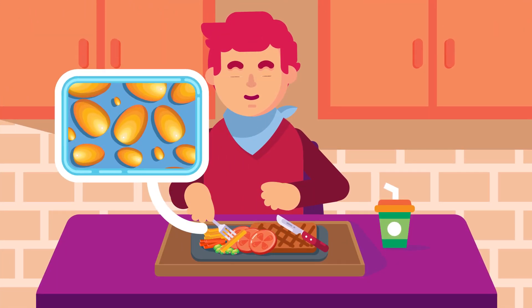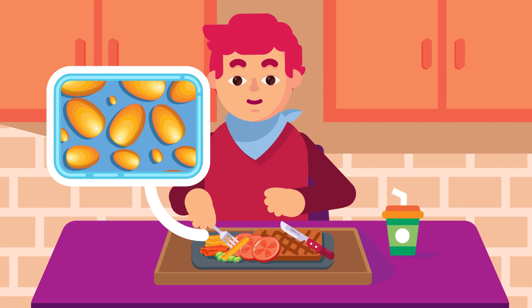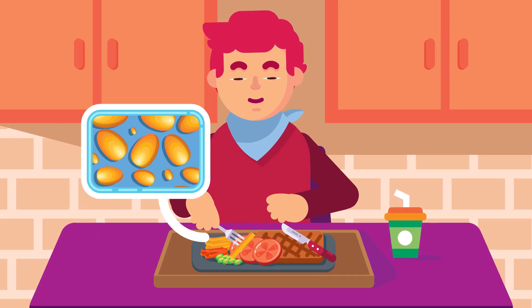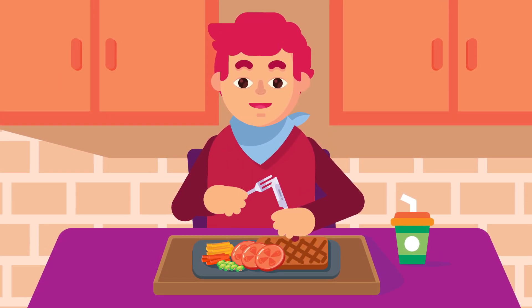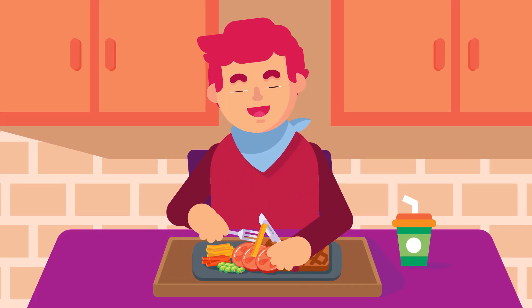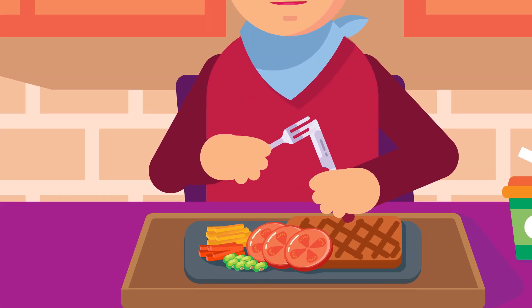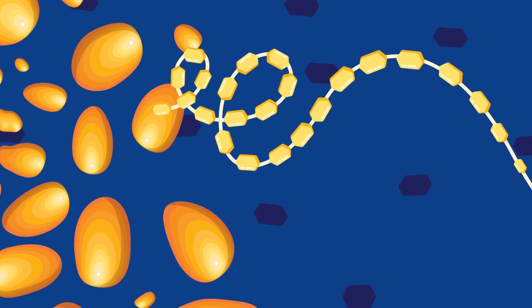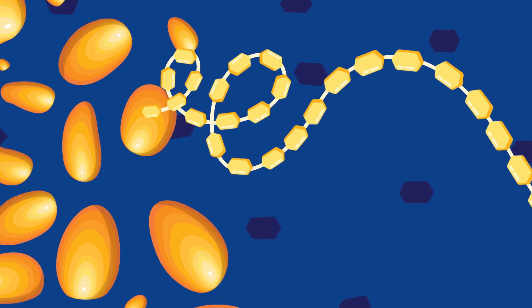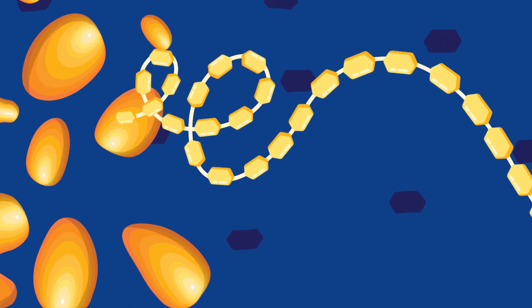Starch is one of the most important sources of carbohydrates in our food. It occurs commonly in vegetable foods such as cereals, potatoes, etc. However, starch is not formed or stored by animals. Starch is made up of a very large number of glucose molecules condensed together to form chains of glucose units.